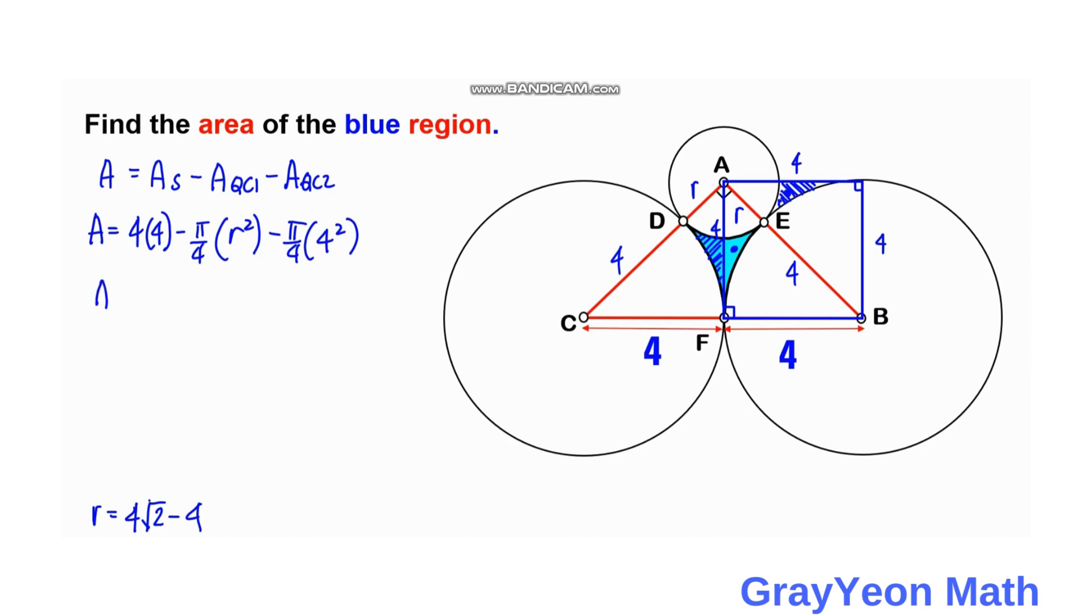So we have area equals 16 minus π/4 times r² minus this becomes 16, so 16 over 4 is 4, so 4π.